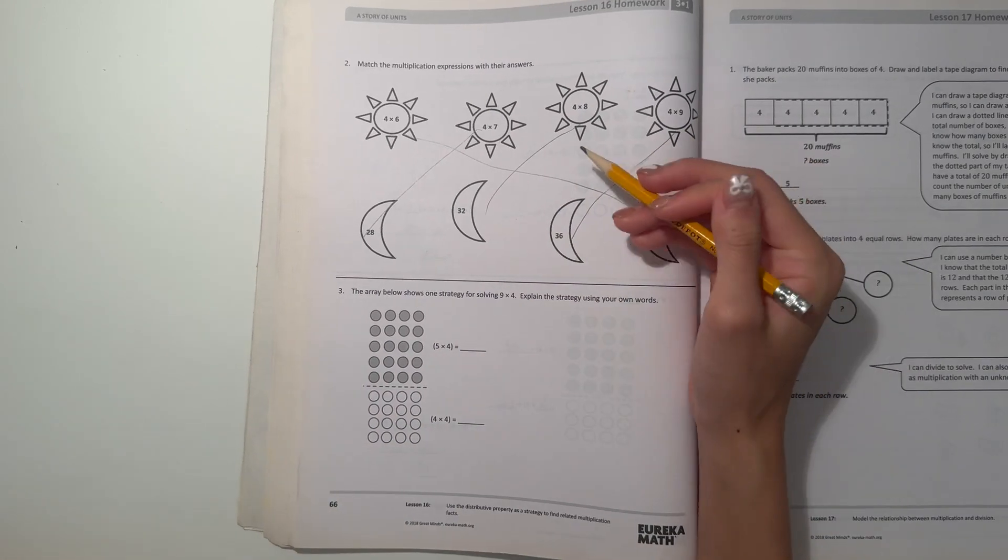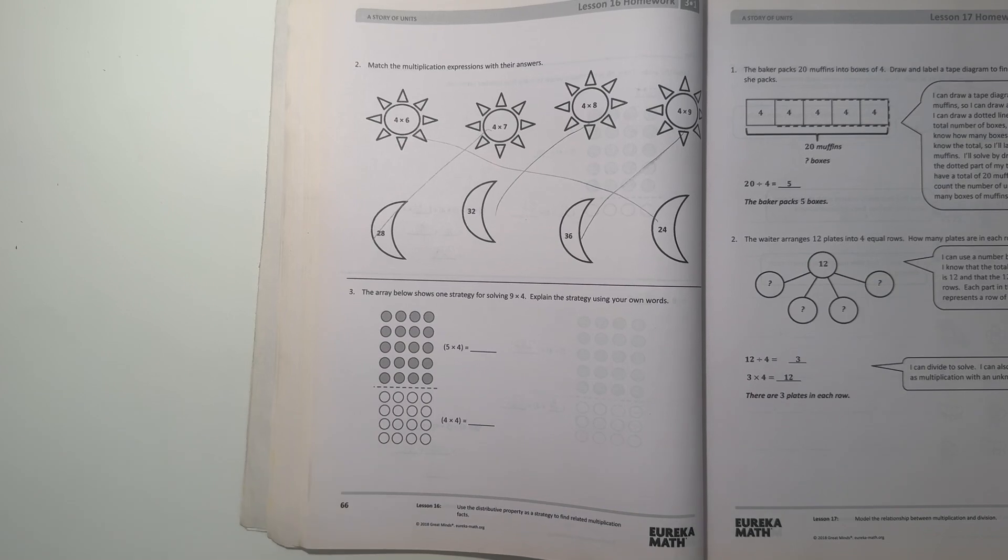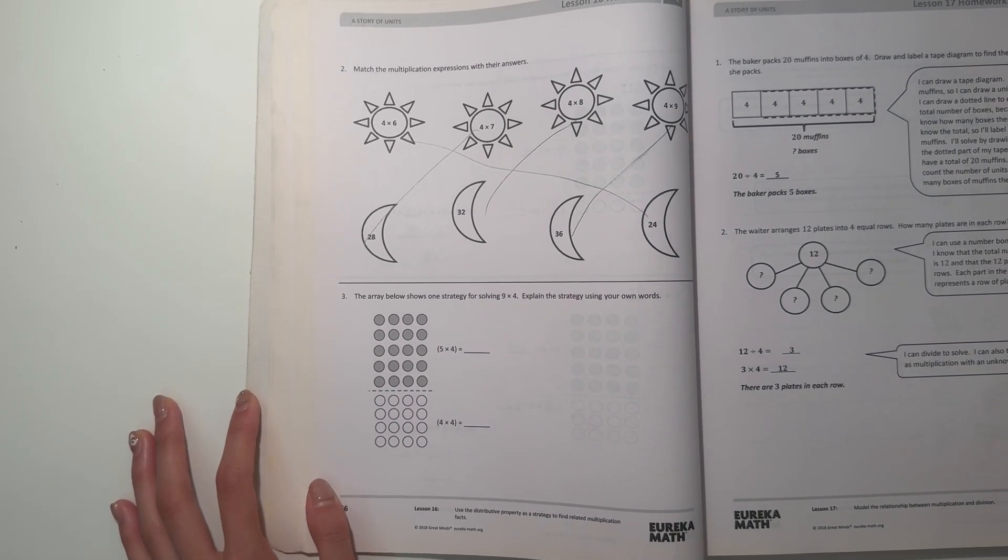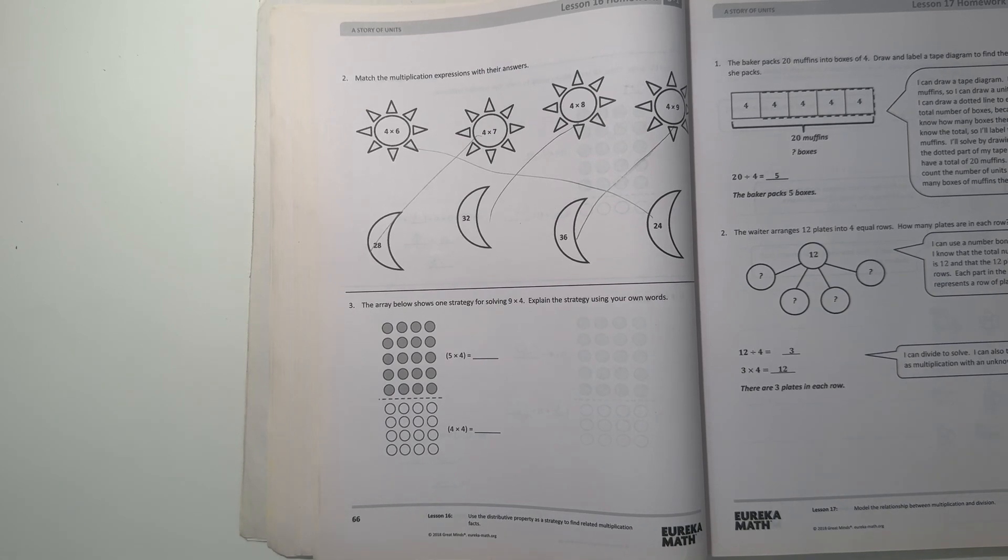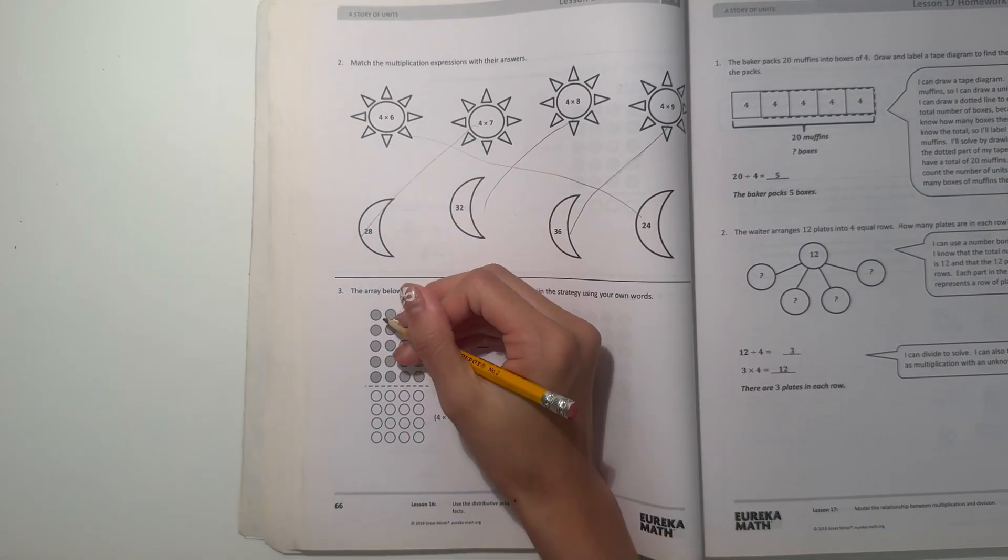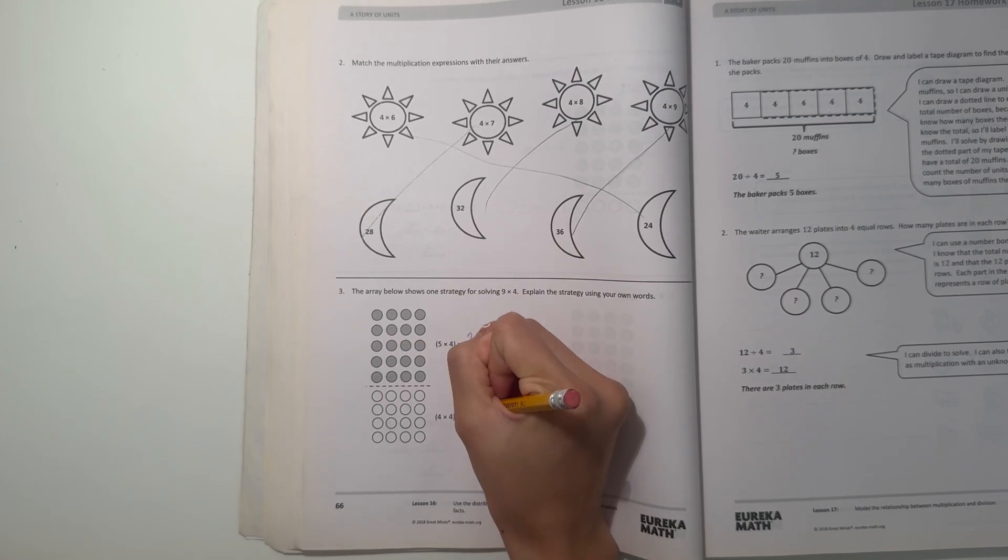Number three: the array below shows one strategy for solving nine times four. Explain the strategy using your own words. So here we have five times four which is twenty, and then four times four which is sixteen.